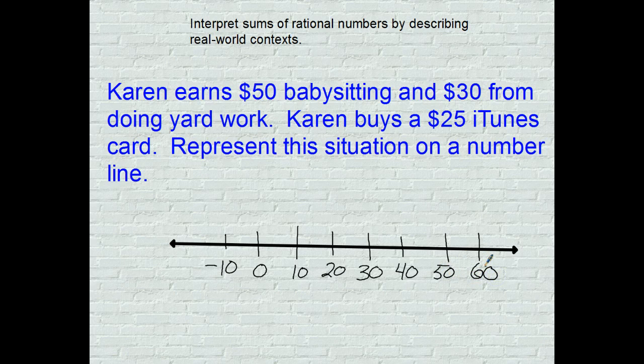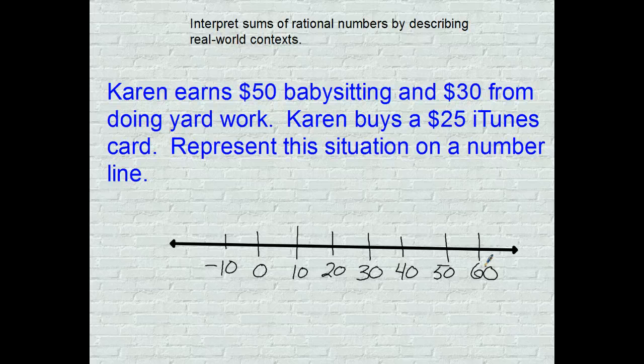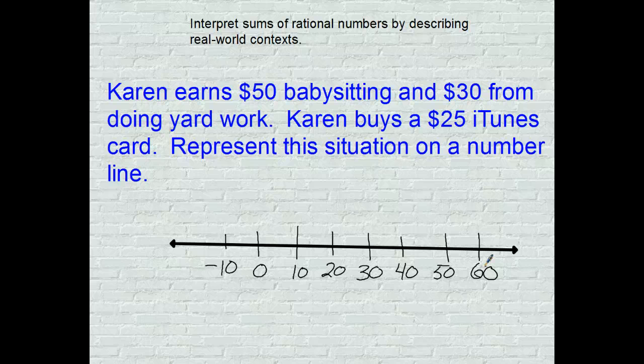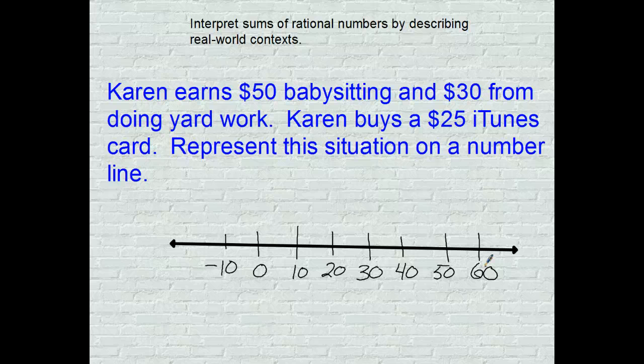Let's see if I made one large enough. I might have to get rid of that negative 10. Karen earns $50 babysitting and $30 from doing yard work. I did make a mistake - I'm going from 50 and then I'm going to have to go higher than 50 because we're adding 30 onto that. Let me make that adjustment.